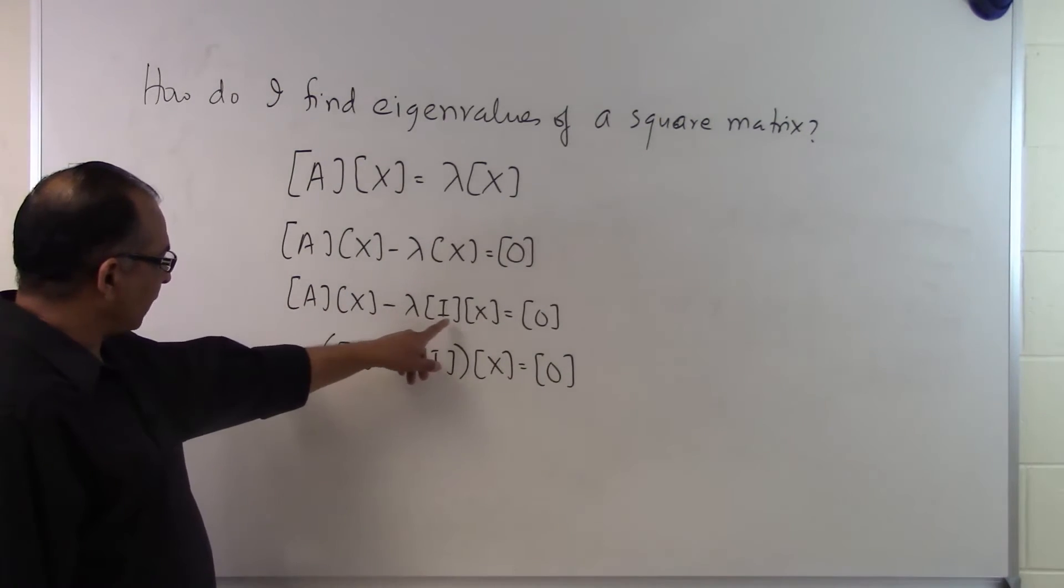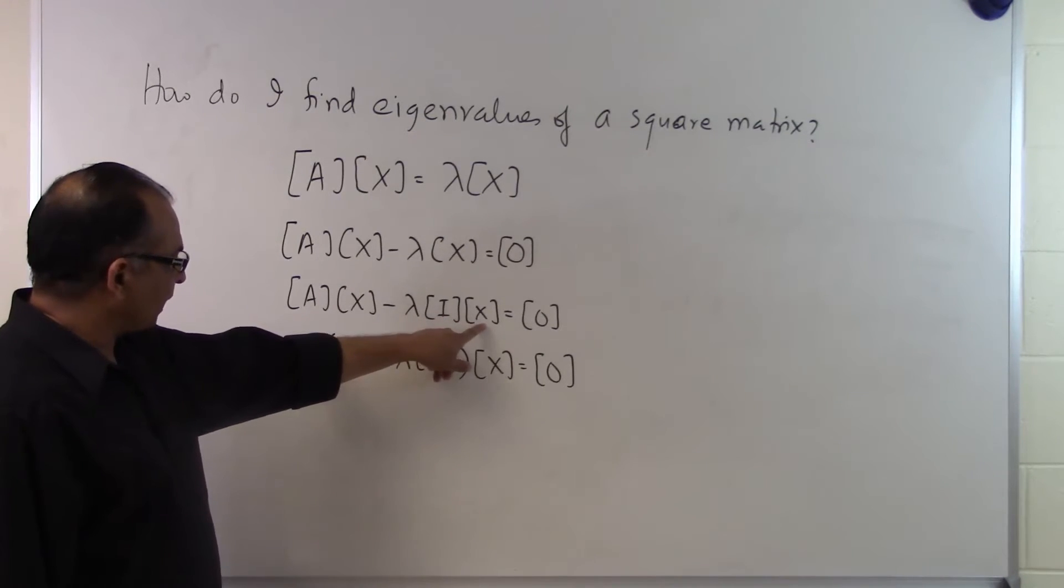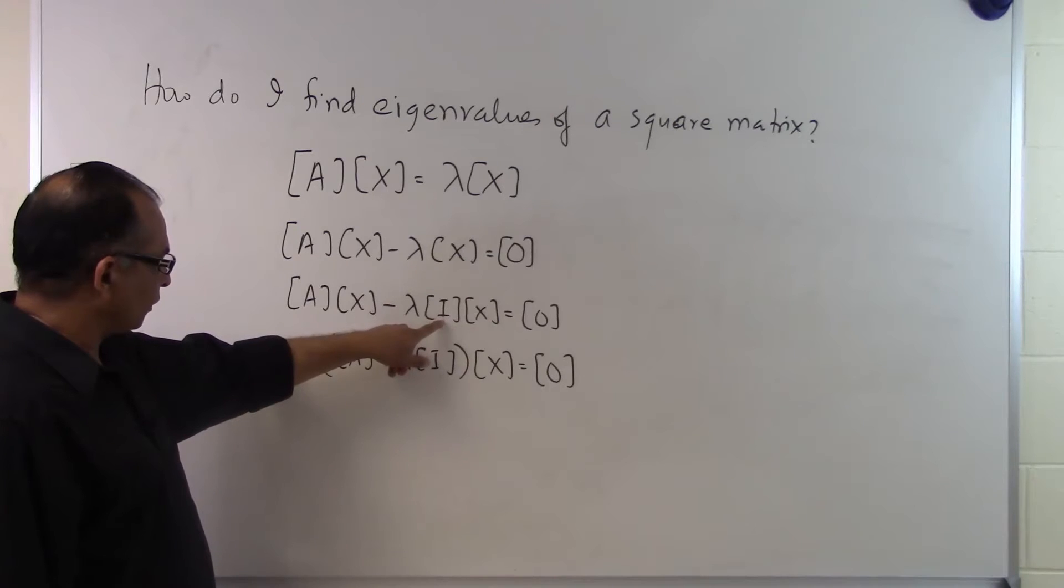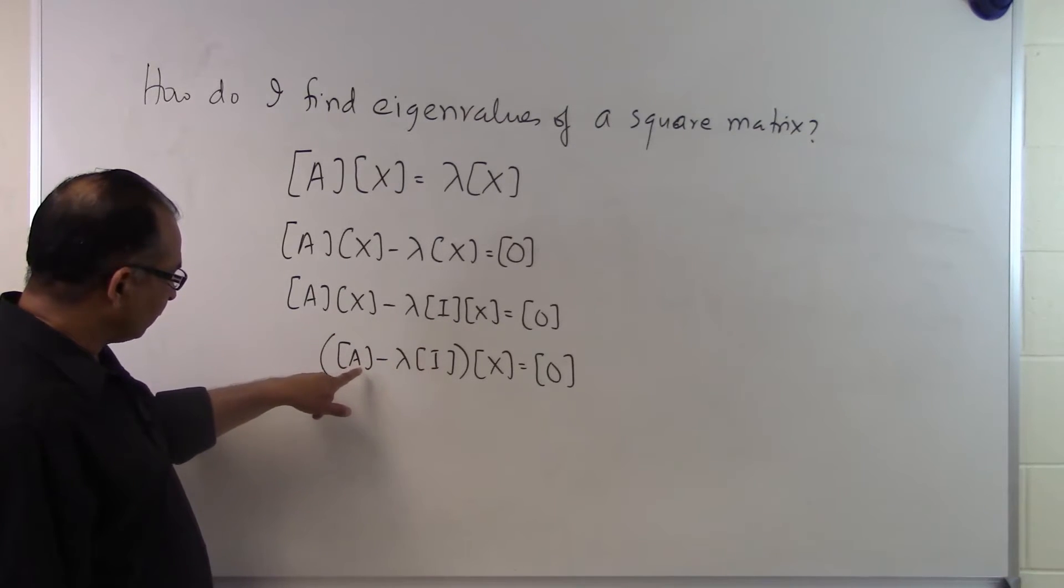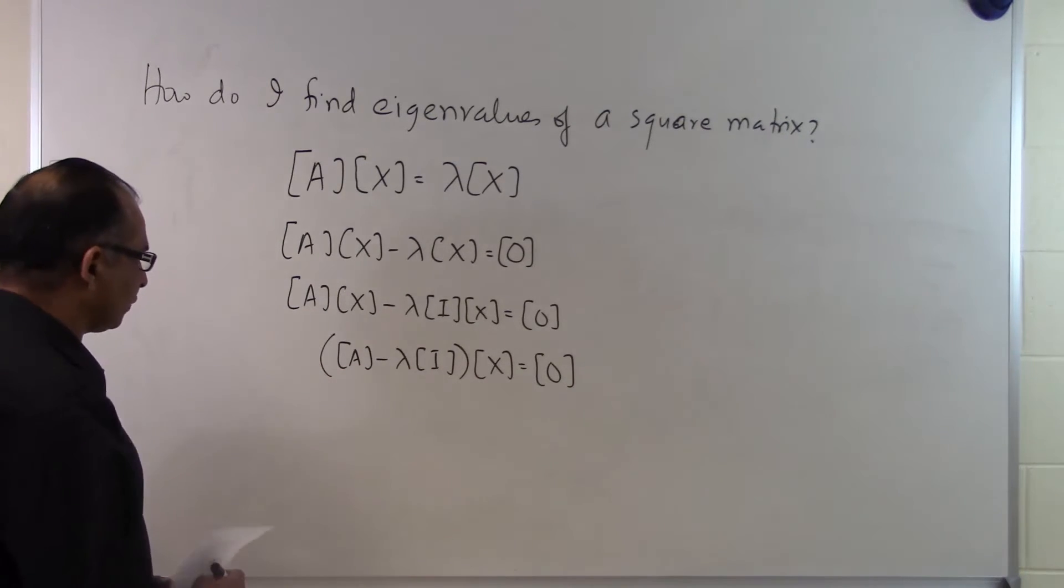The reason why I multiplied this lambda by I is because if I multiply I by x, I get x itself. So there's nothing wrong with doing that. But the reason why I introduced this identity matrix is because when I'm doing the subtraction here, I'm doing the subtraction between matrices of the same size. That allows me to do that.